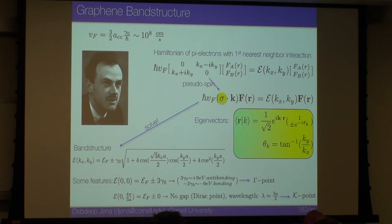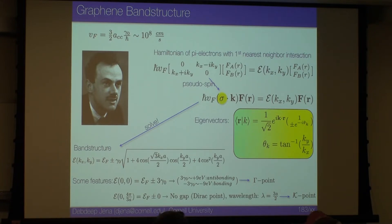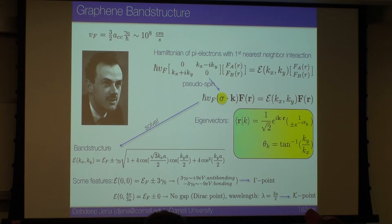Of course you can do a completely atomistic picture — instead of tight binding you can do full blown first principles calculations — but at least the concepts don't emerge as simply as you can see in the tight binding model. Typically, even after a full accurate calculation of a crystalline solid, when looking at electrical transport we are always interested in what happens near the top of the valence band and the bottom of the conduction band where the Fermi level is. So it's a 2×2 Hamiltonian, which is also what you need in electrical transport.